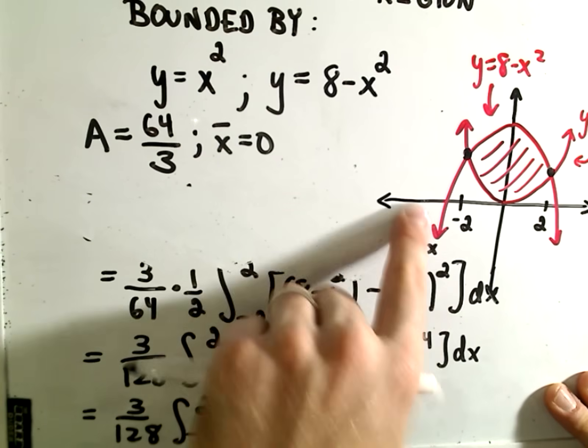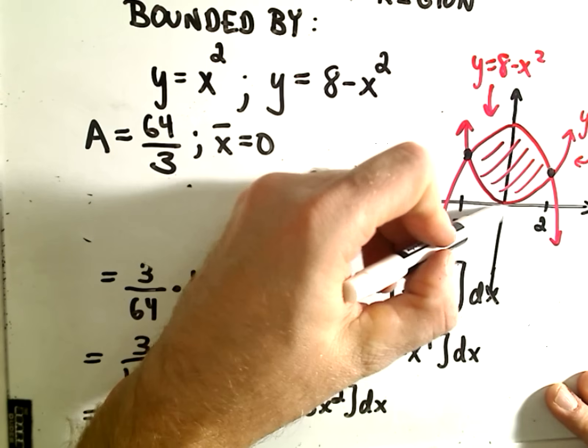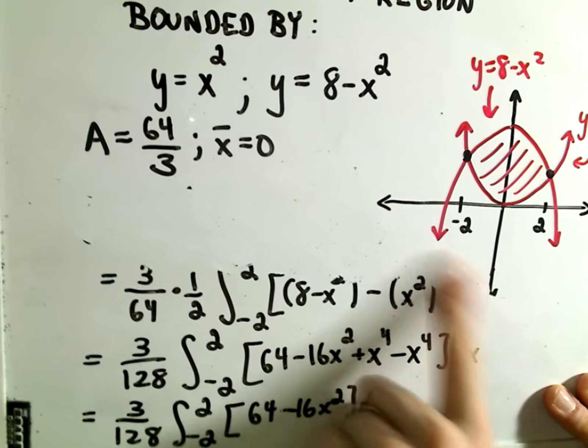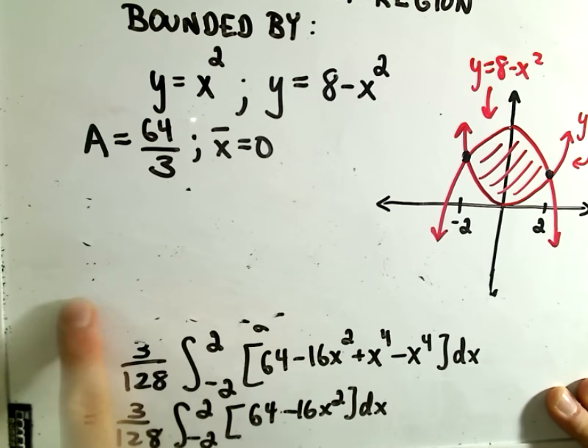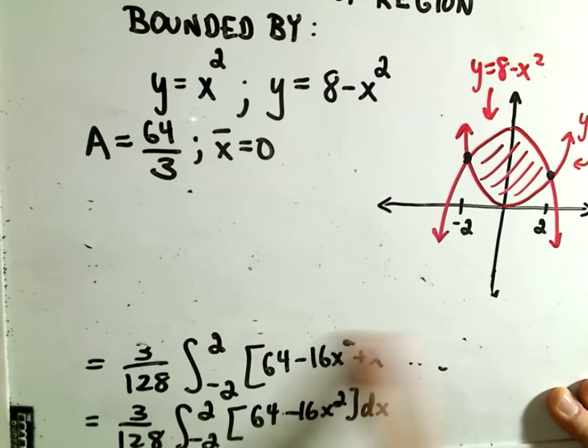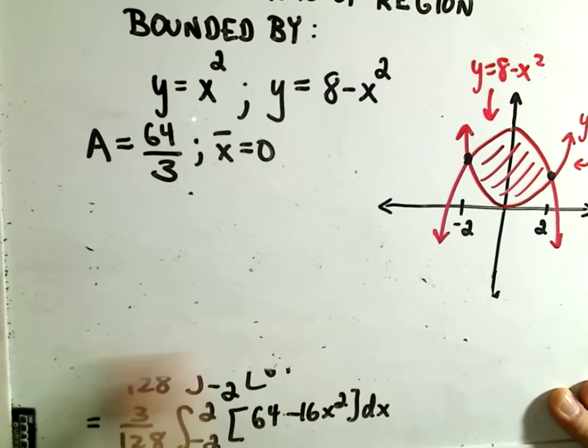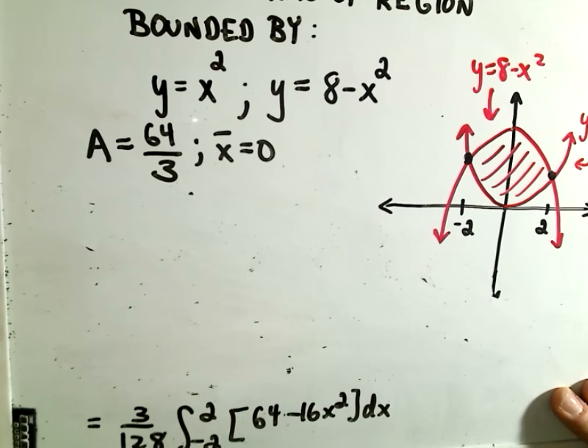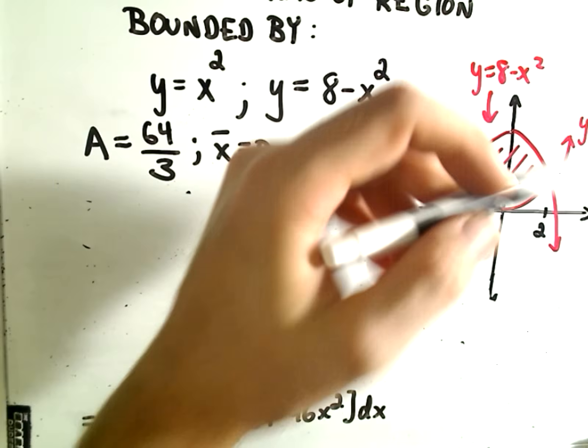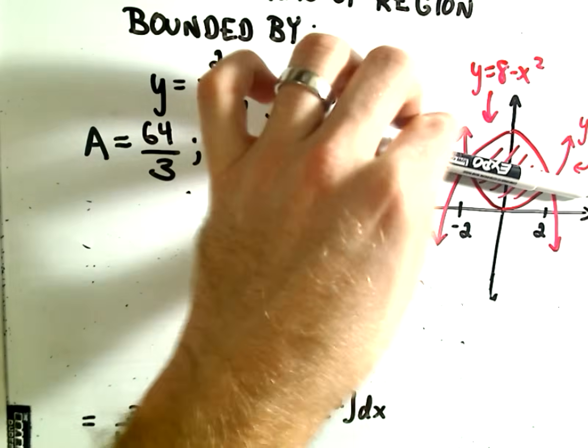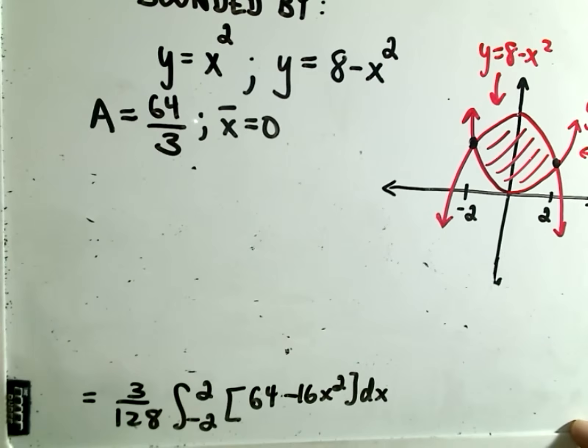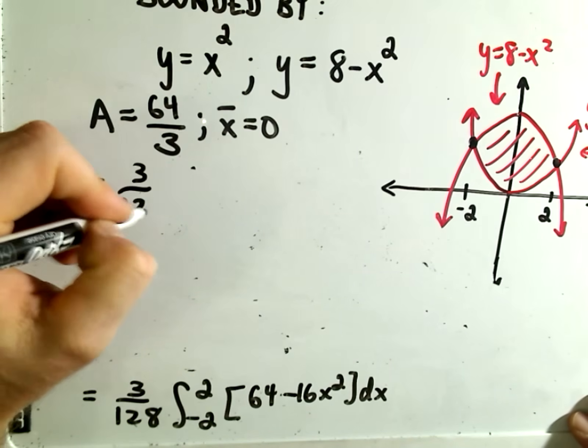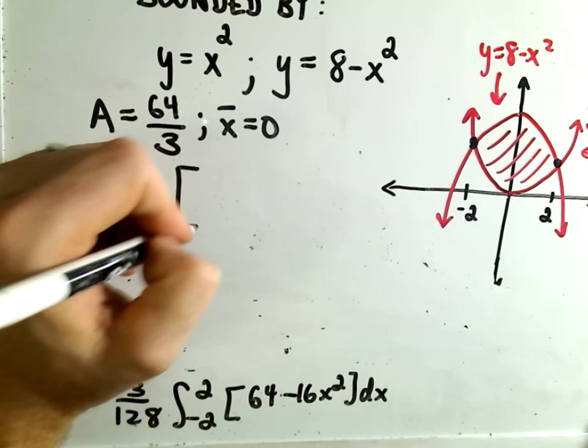Intuitively, our y-bar, the smallest y value is 0, the biggest y value of our region is 8. So our y-bar had better be something between 0 and 8. Intuitively, I don't know, is this region symmetric about the middle part as well? It certainly looks like it, so we'll see what happens here.